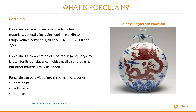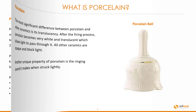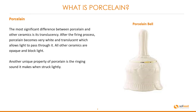Porcelain can be divided into three main categories: hard paste, soft paste and bone china. The most significant difference between porcelain and other ceramics is its translucency. After the firing process, porcelain becomes very white and translucent which allows light to pass through it. All other ceramics are opaque and block light. Another unique property of porcelain is the ringing sound it makes when struck lightly.